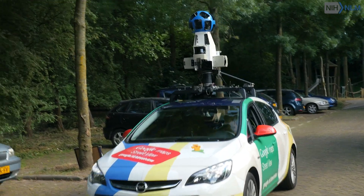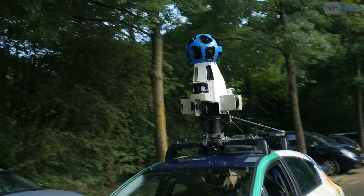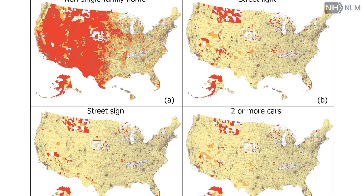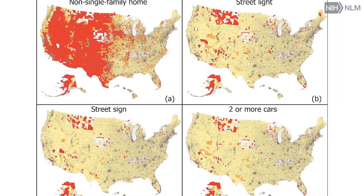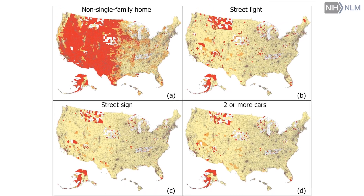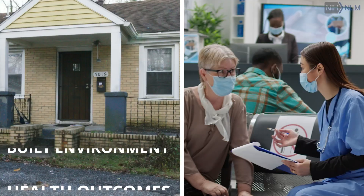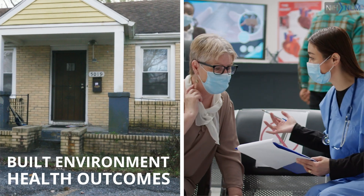This particular project funded by the National Library of Medicine is producing a new national data resource for built environment characteristics using Google Street View images and computer vision models, to estimate the association between built environment characteristics and health outcomes on a national level.